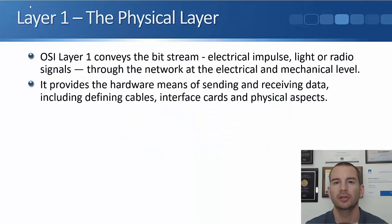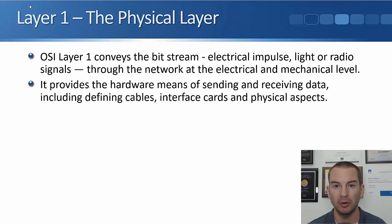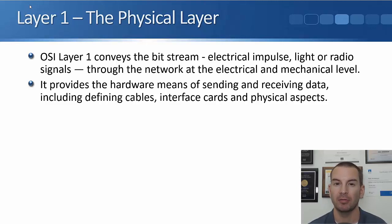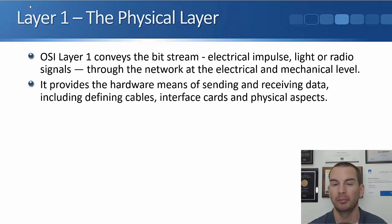In this lecture you're going to learn about the final layer in the OSI model, which is layer one, the physical layer. OSI layer one conveys the bit stream — meaning it puts the actual bits onto the wire. That could be electrical impulse over copper cables, light over fiber optic cables, or radio signals over wireless. It takes control of the network at the electrical and mechanical level, providing the hardware means of sending and receiving data, including defining the cables, interface cards, Ethernet ports, WAN port types, and the physical aspects of the network.